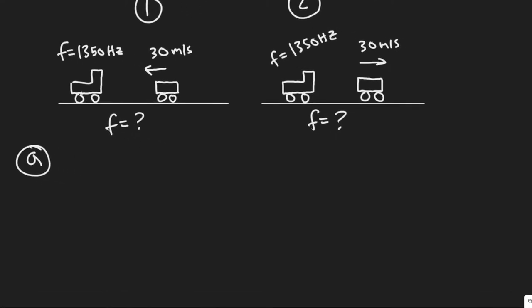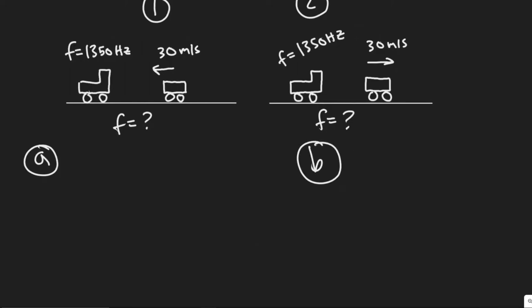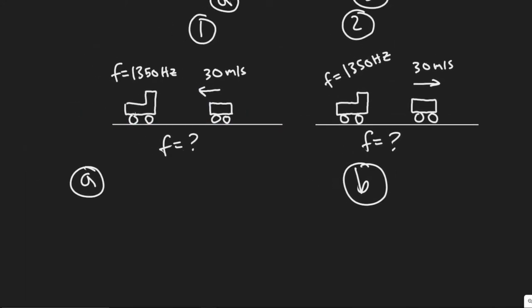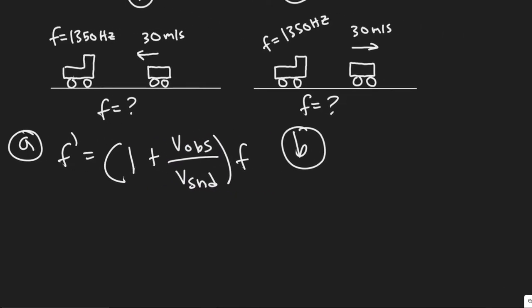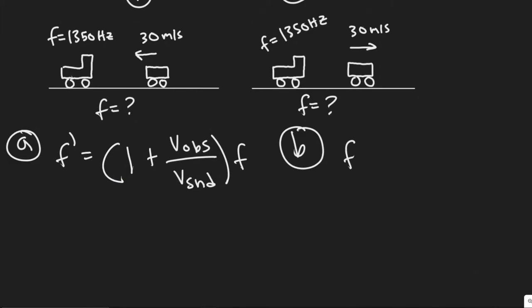So there's two formulas. I'll write them out for A and B. So the formula for if you're the observer approaching or going towards the stationary source that's emitting, you can calculate the frequency. We call it f prime. That's what the book uses, so I'll use that. One plus the velocity of the observer divided by the velocity of sound multiplied by frequency. And so the only thing that changes for this is the positive sign. So it's only the minus sign right there is what changes.